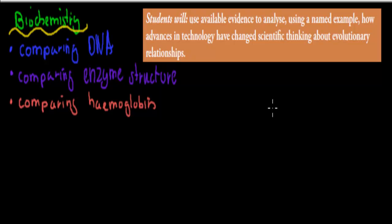Welcome back. In the last video we talked about how different vertebrates had very similar forelimbs. So for example how reptiles, frogs, amphibians, mammals or fish, how they all have forelimbs which are quite similar. So that was a second-hand investigation. Now we're going to cover the next second-hand investigation. And this one says students will use available evidence to analyze, using a named example, how advances in technology have changed scientific thinking about evolutionary relationships.